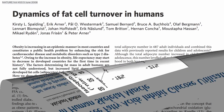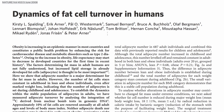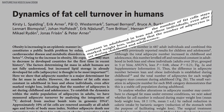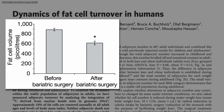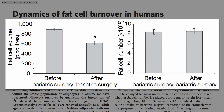The number of fat cells we have stays constant in adulthood. Interestingly, the way they figure this out is by measuring the amount of radioactive carbon trapped in our DNA from all the nuclear bomb tests. Anyway, after massive weight loss, our fat cells shrink as they offload fat, but the number stays the same.